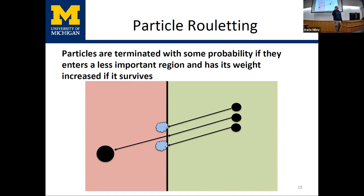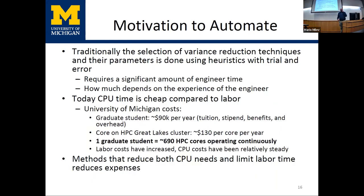The opposite technique is roulette. When a particle moves from a more important region to a less important one, you roll a random number. One-third of the time the particle survives and its weight is promoted back up by a factor of three; two-thirds of the time it's killed. This preserves the average behavior of the radiation field — it's not physical, it's pure numerical mathematics, but you still get the right answer for the mean.